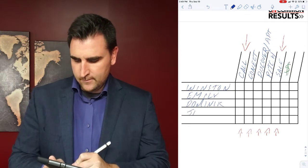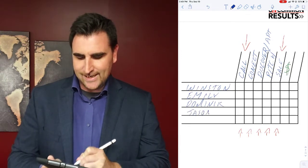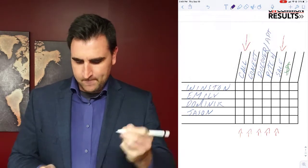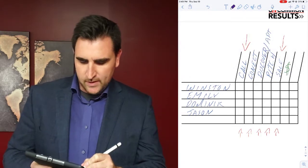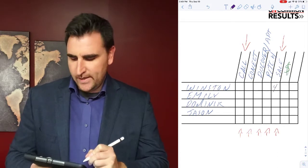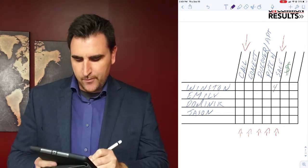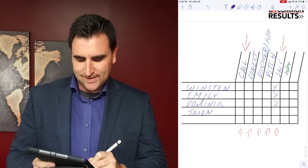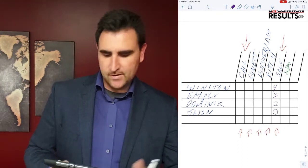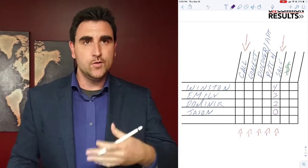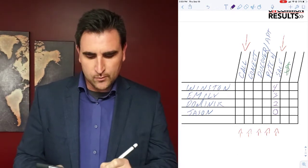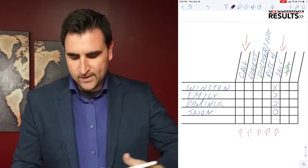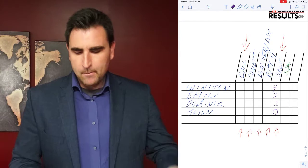Let's say we're only tracking sales. Winston has made four sales this week, Emily has made three, Dominic's made two, Jason has made zero. You would think that Winston is the superstar here, right? Especially if this was directly related to 1K or 2K per sale. Winston would look like the superstar.